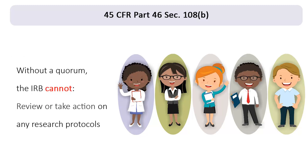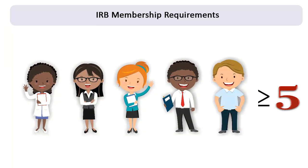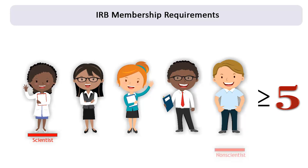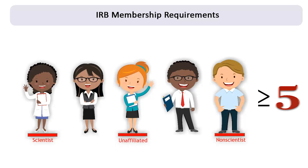Without meeting the quorum requirements, the IRB cannot review or take action on any research protocols. Each IRB must have a minimum of five members, including at least one member whose primary concerns are in scientific areas, one member whose primary concerns are in non-scientific areas, and one member who is not affiliated with the institution aside from serving on the IRB.